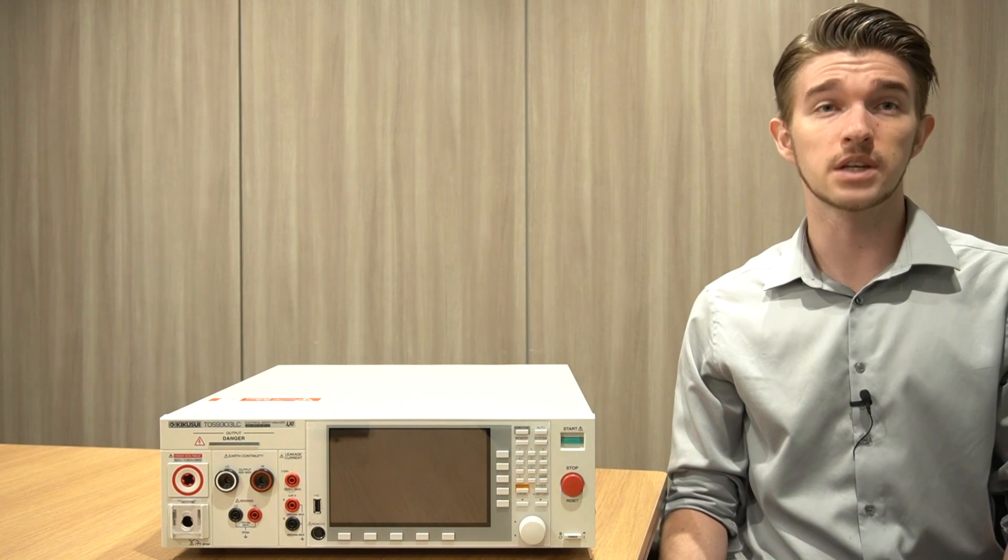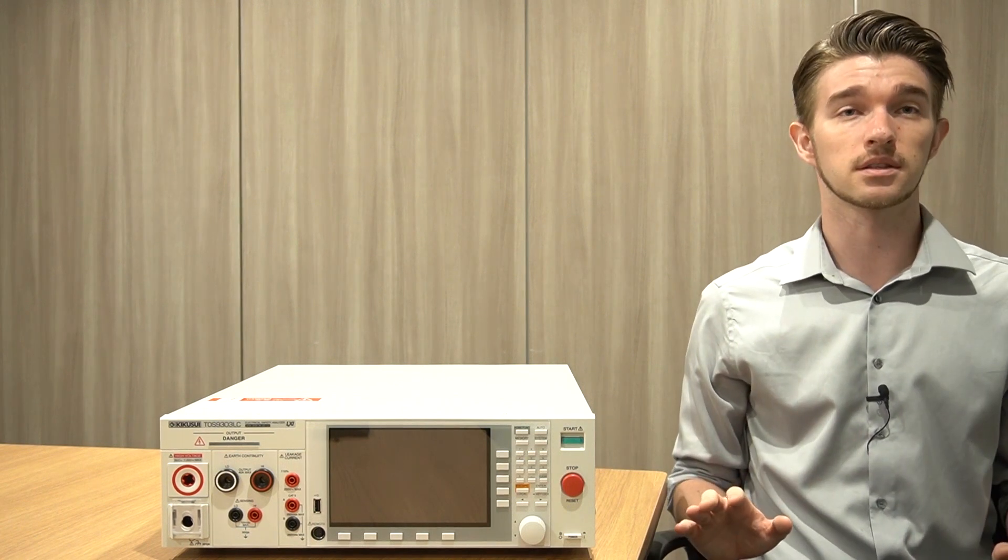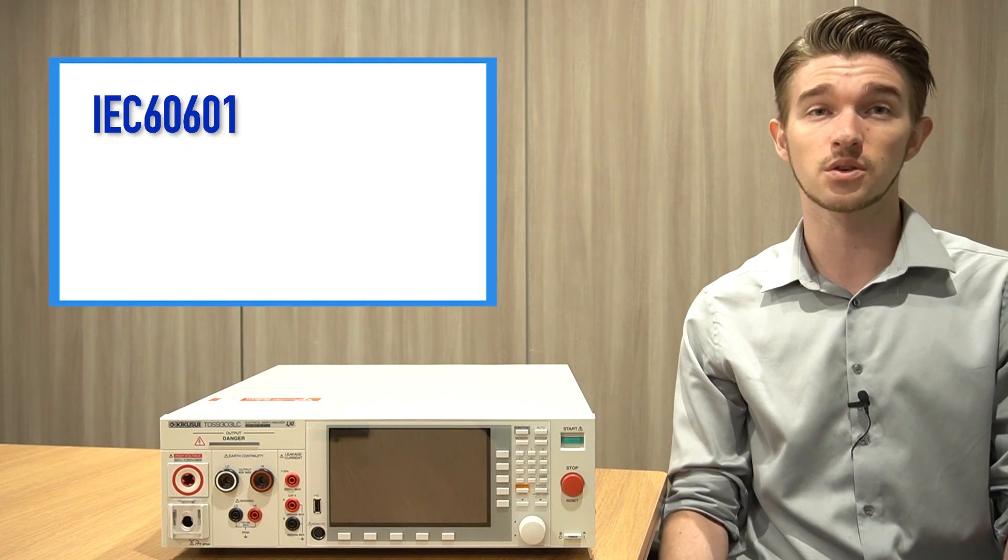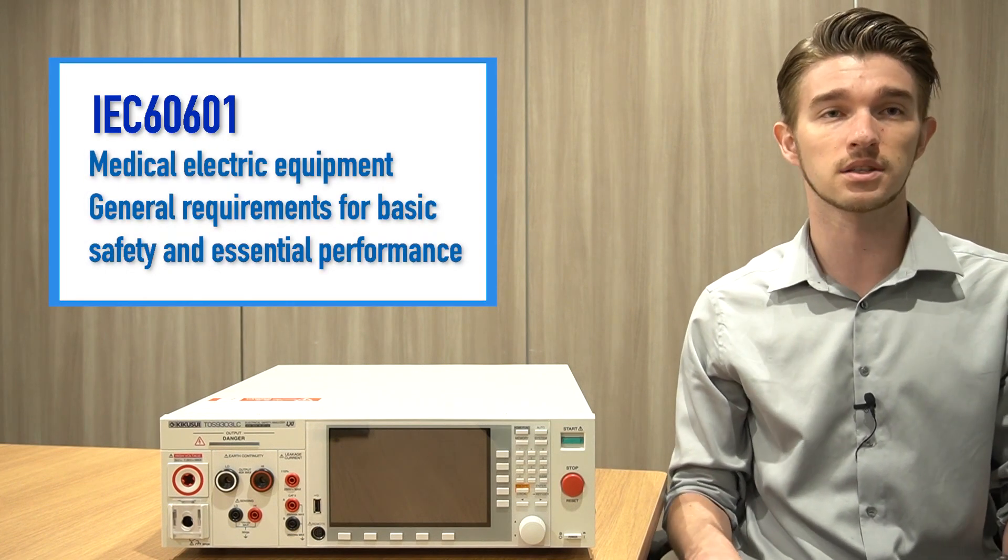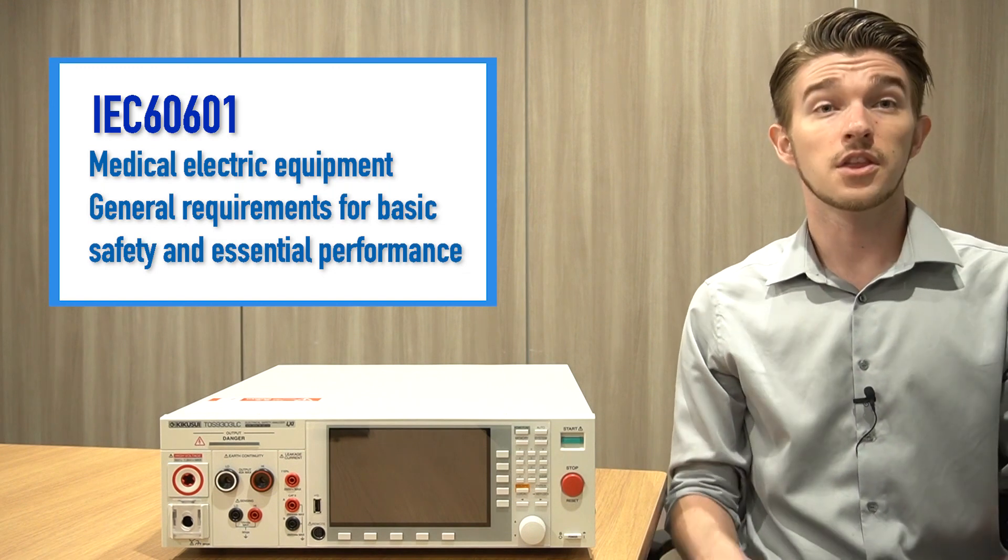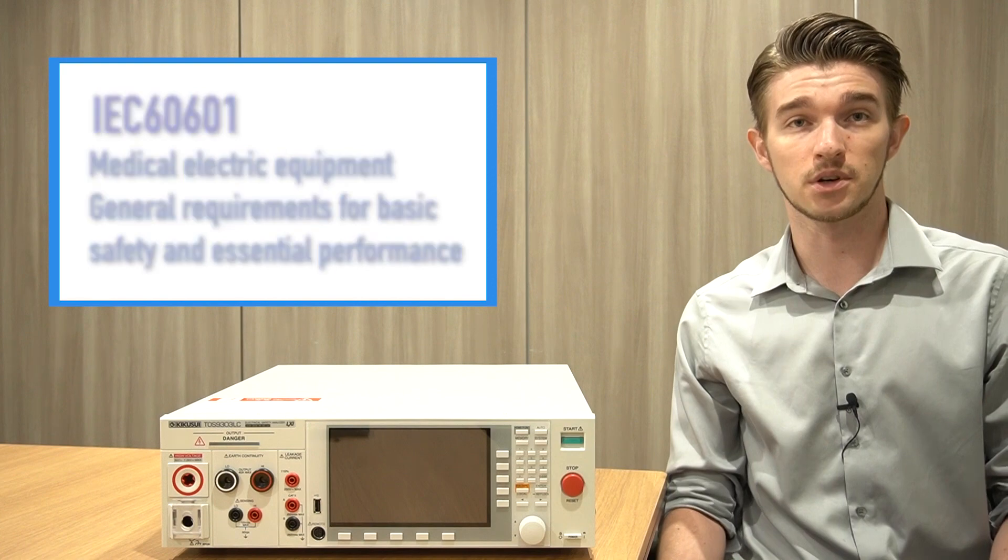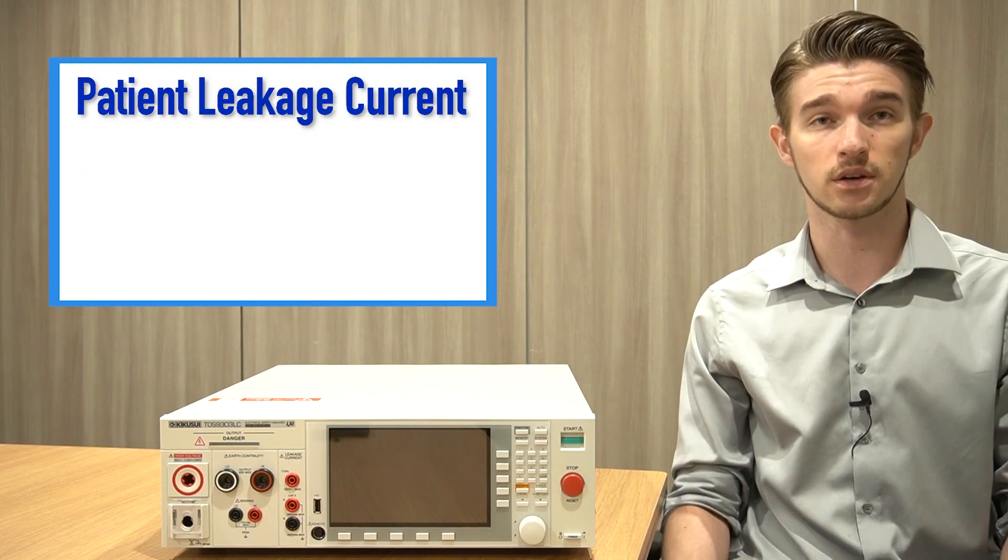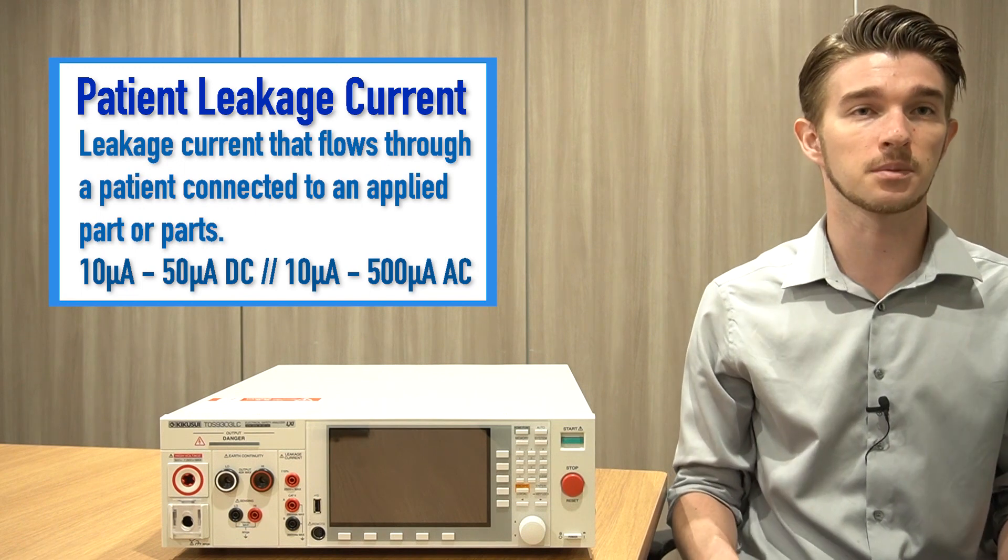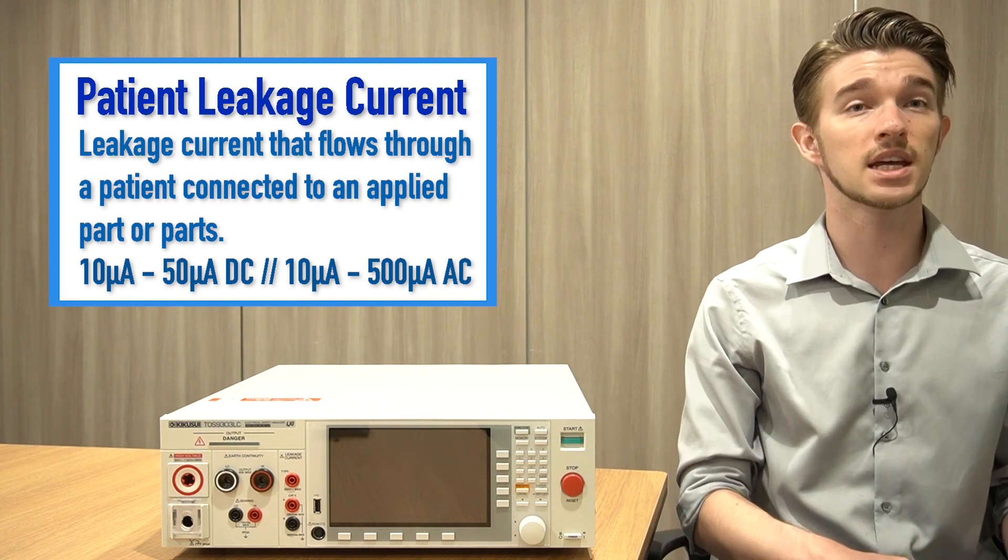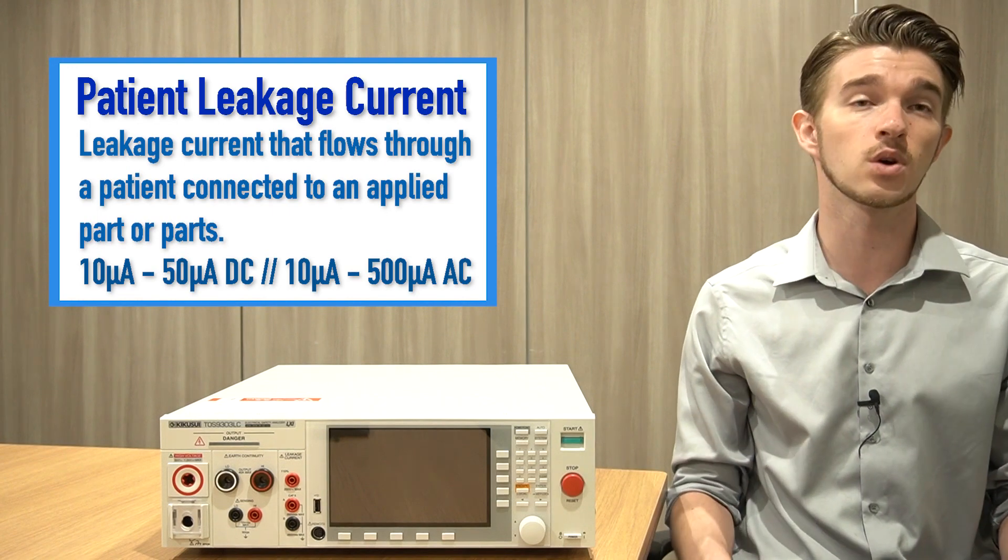In order to protect patients from even the smallest traces of leakage current, standards for medical devices such as IEC 60601 define strict requirements for protection against electric shock hazards. These standards include electromedical device-specific safety parameters such as patient leakage current, which can range from 10 microamps to 50 microamps DC, or 10 microamps to 500 microamps AC, depending on the equipment classification.